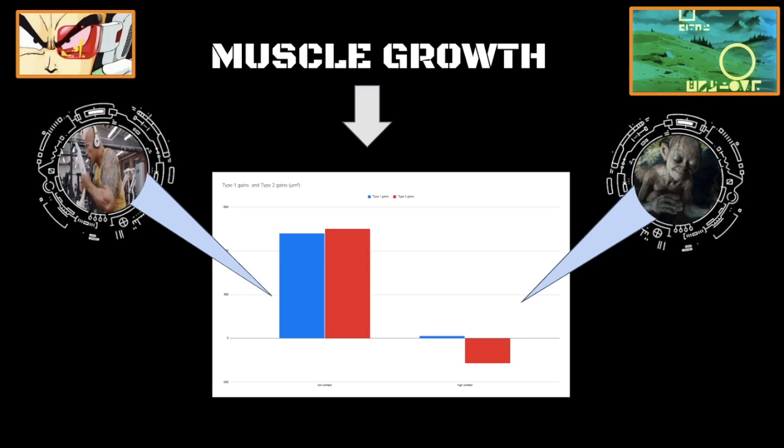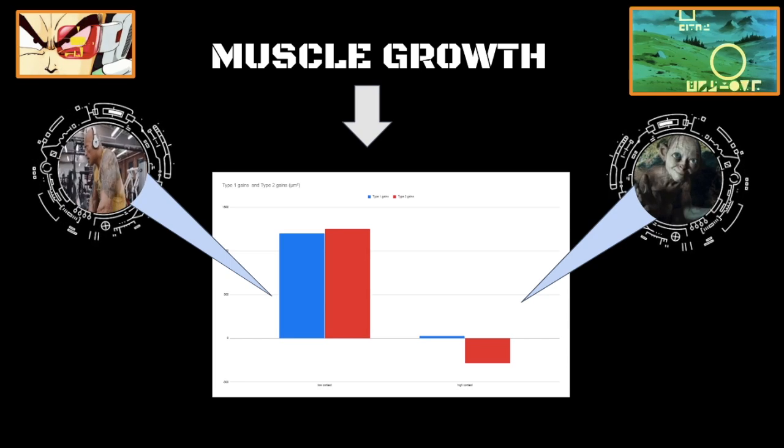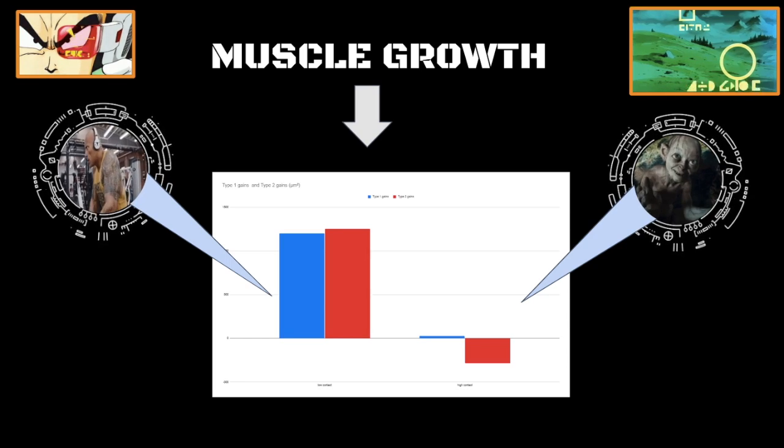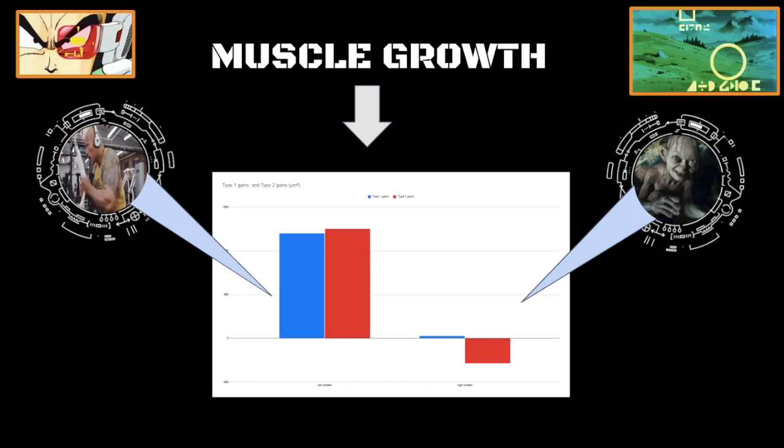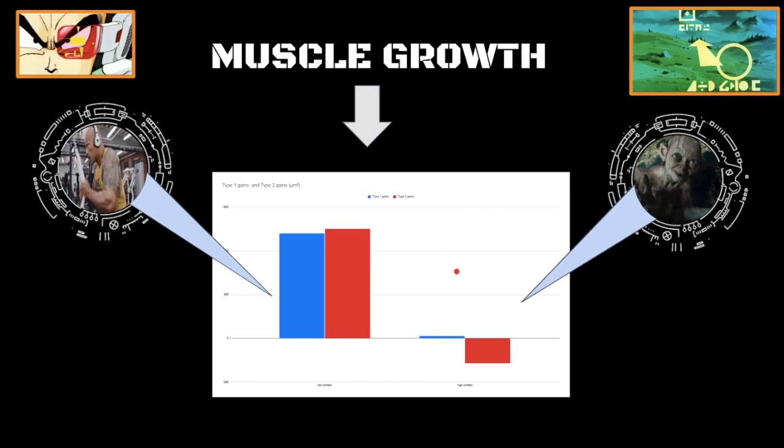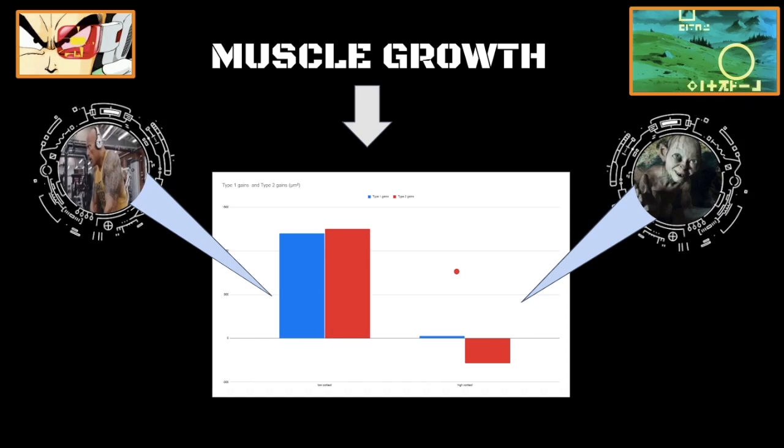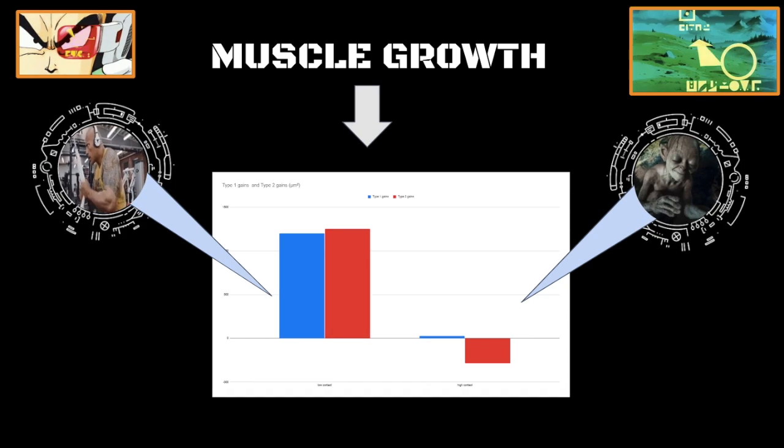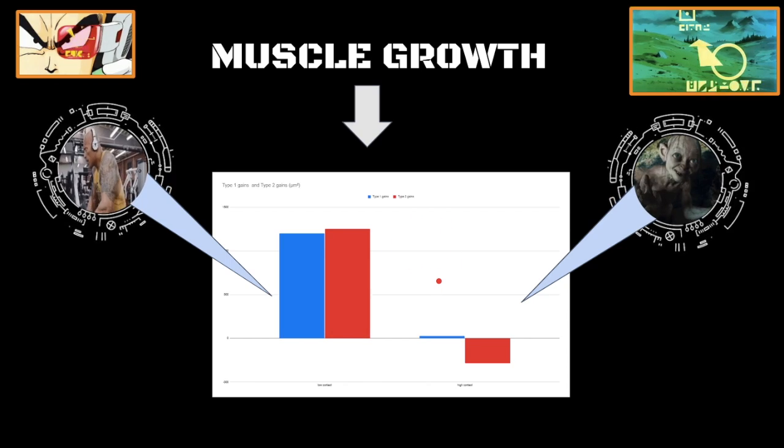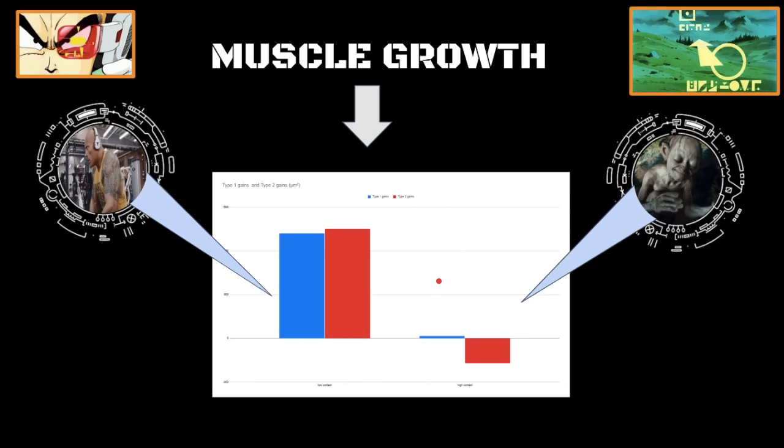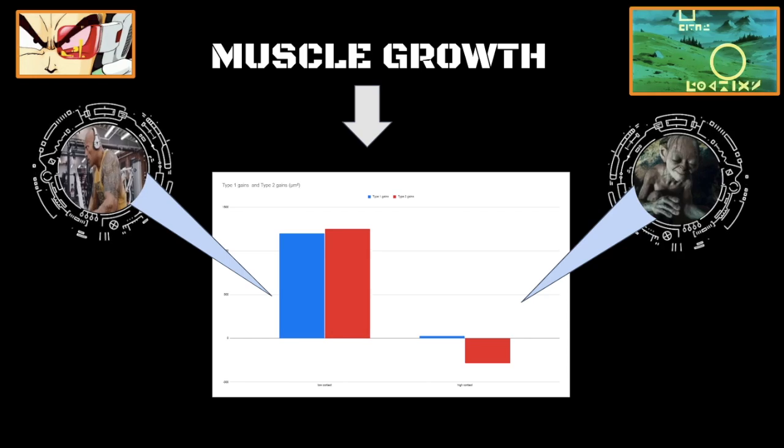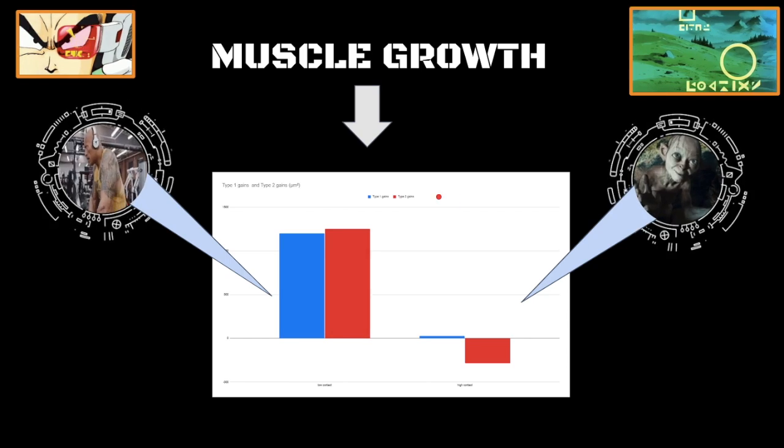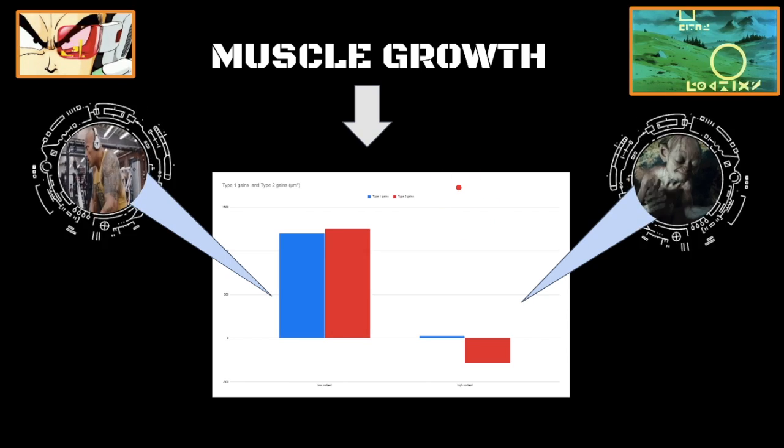And it is also what decides how well you recover from training, in addition to the amount of tissue that your body is actually able to synthesize. It's all about nutrition. Training simply increases your body's sensitivity to those nutrients, to your nutrition. People think muscle building happens in the gym. No, it happens in the kitchen. The gym simply increases the stimulatory effect of nutrition on muscle growth.